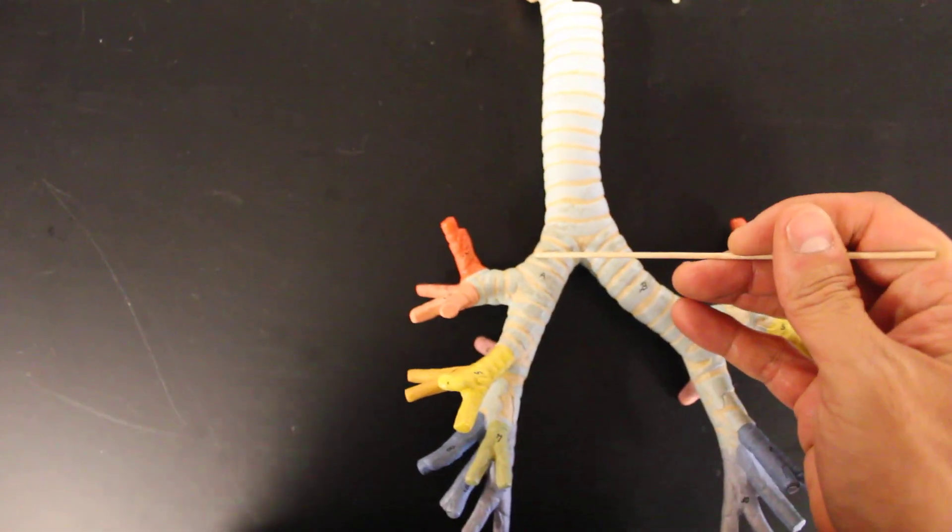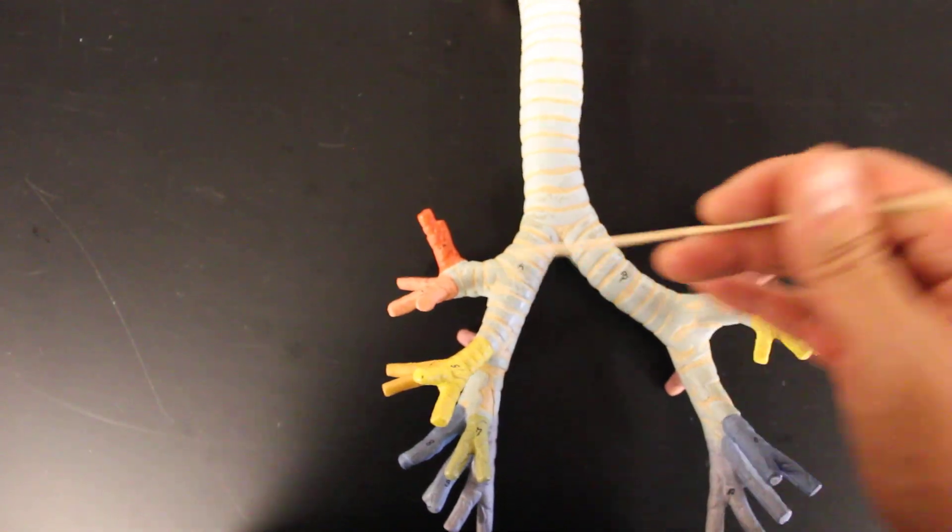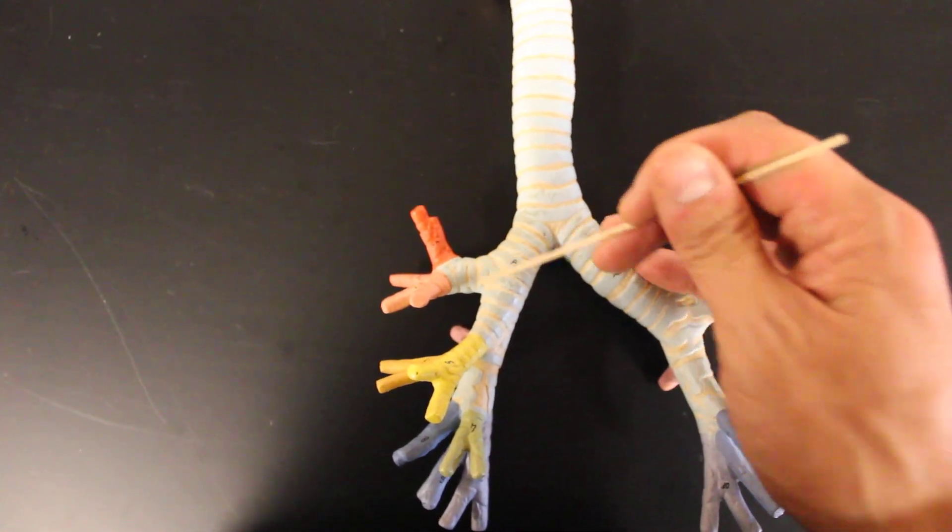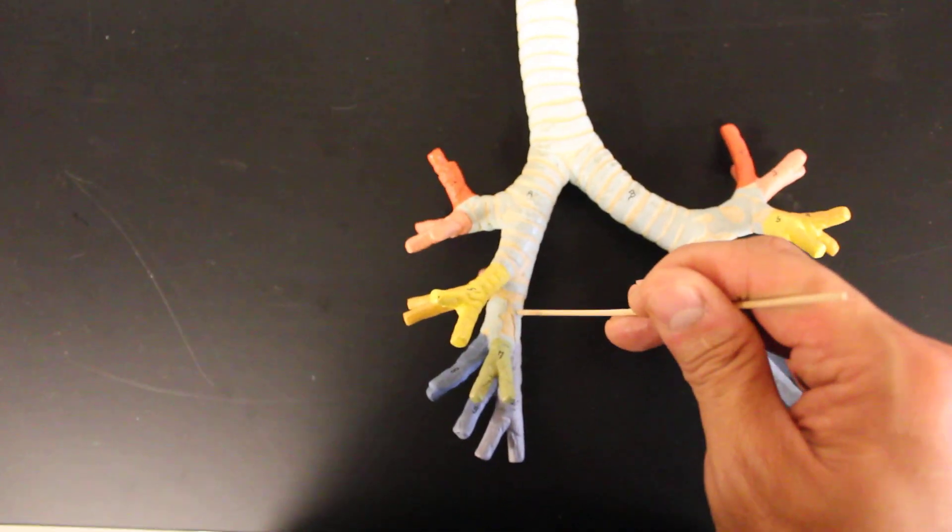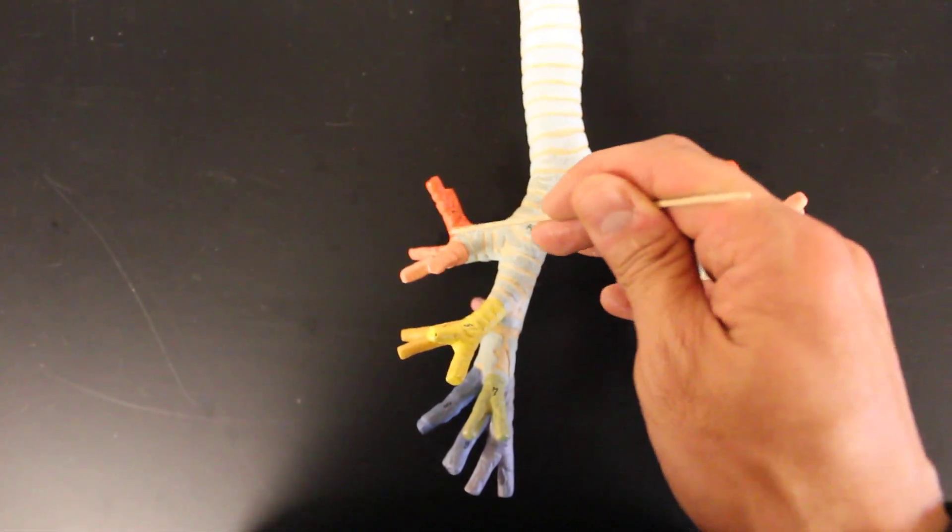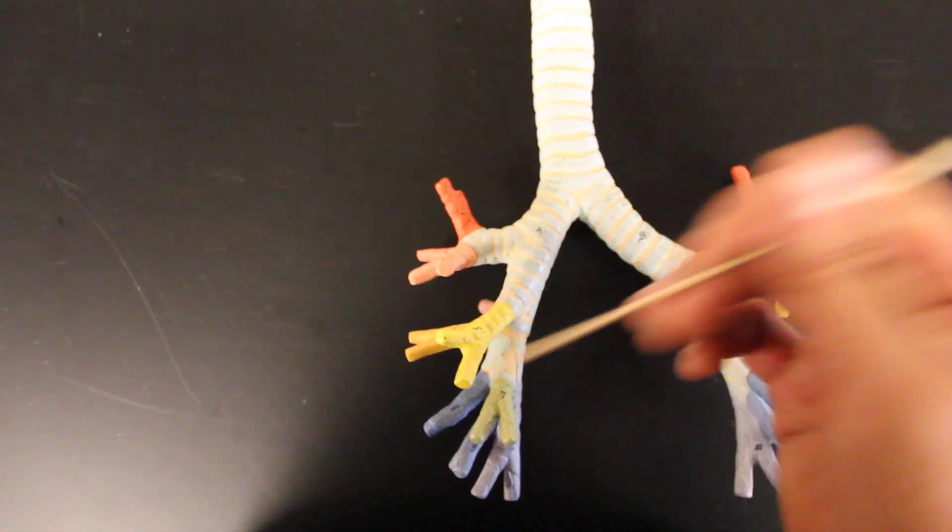On the right side we have actually three secondary bronchi because we have three lobes of the lungs. One, two, and then three. You'll notice that three secondary bronchi and then the rest tertiary of course and then bronchioles at the top.